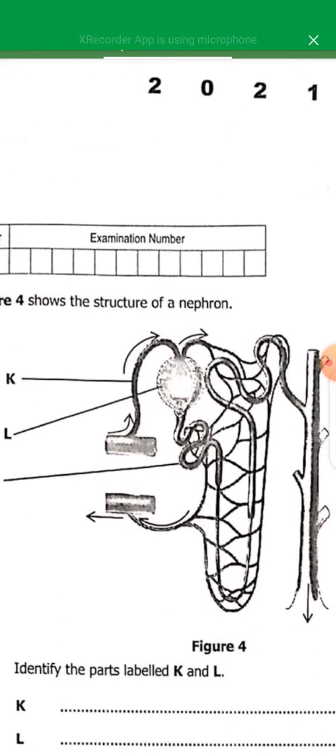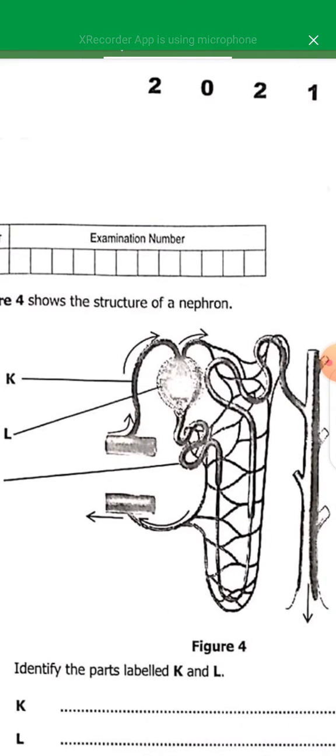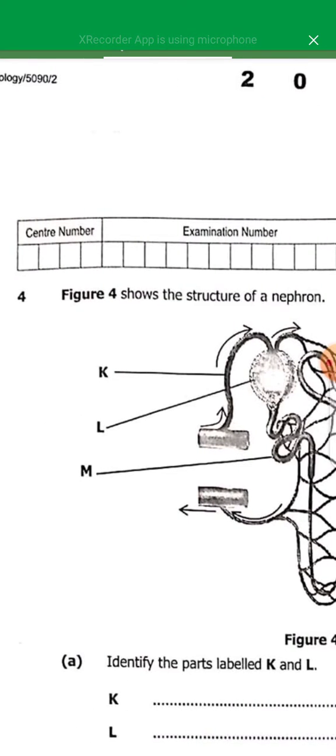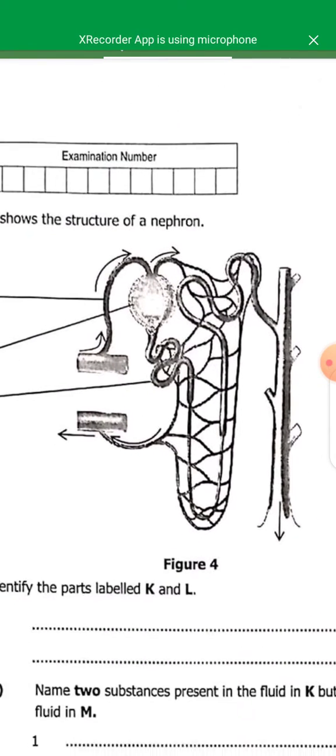Today we'll continue with biology paper 2 and we're doing question number 4. So question number 4 was about excretion. And the diagram which they brought is a nephron. So it says, figure 4 shows the structure of a nephron.